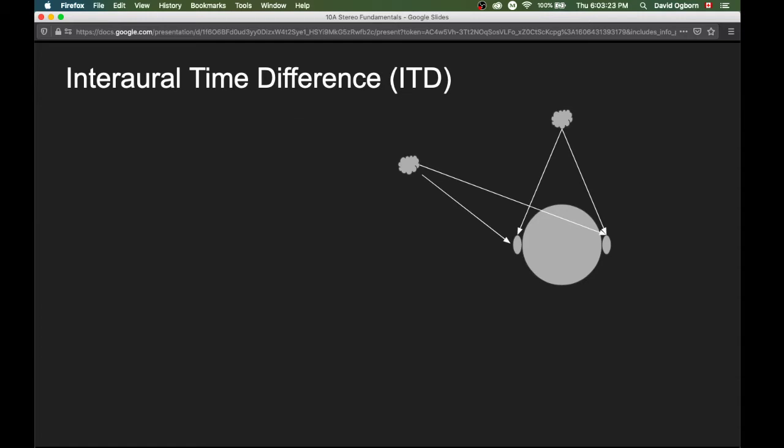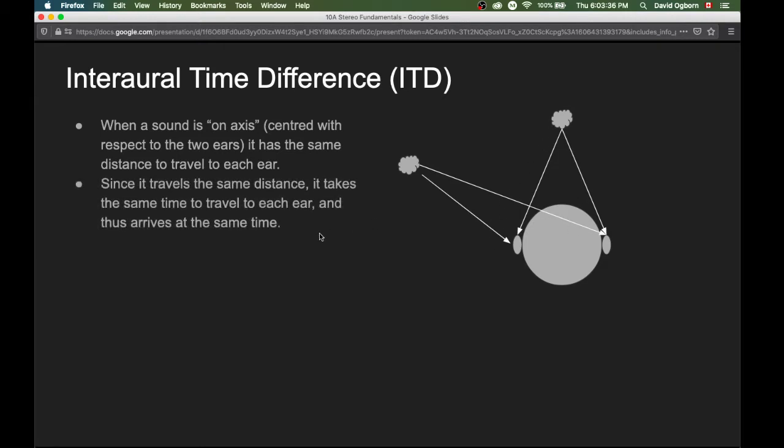Let's move to talk about the other cue, interaural time difference, or ITD. When a sound is on axis, so centered with respect to our two ears, again it has the same distance to travel to each ear. And since it travels the same distance, it takes the same time to travel to each ear and thus arrives at the same time.